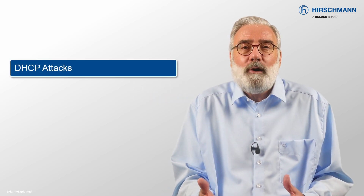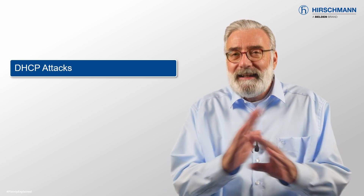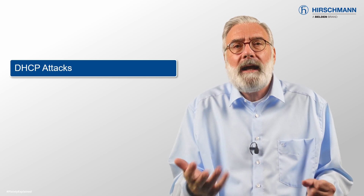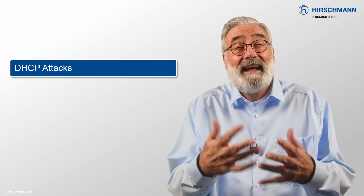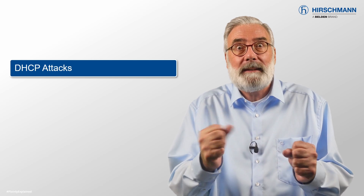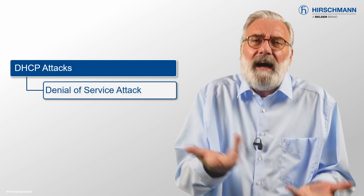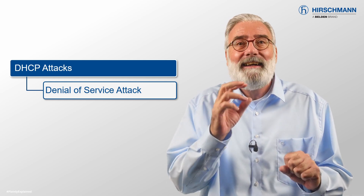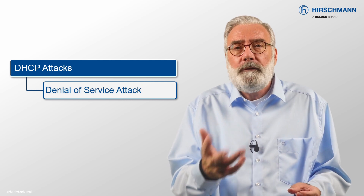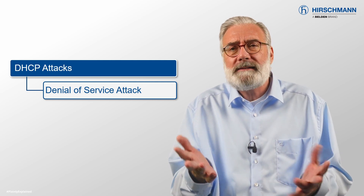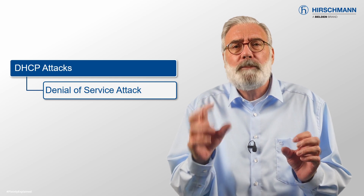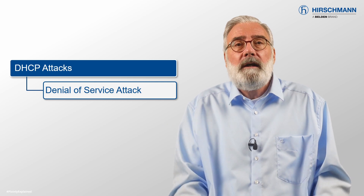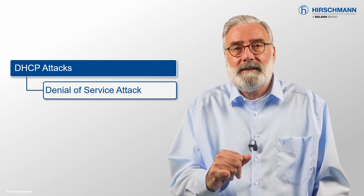DHCP was designed for ease of implementation. It was never intended to be secure. For example, DHCP clients cannot distinguish between authorized and unauthorized DHCP servers. If an unauthorized DHCP server is deliberately or even accidentally connected to your network, the rogue DHCP server can issue IP addresses which are not compatible with your addressing system. Communication will then be disrupted. This is known as a denial-of-service attack.